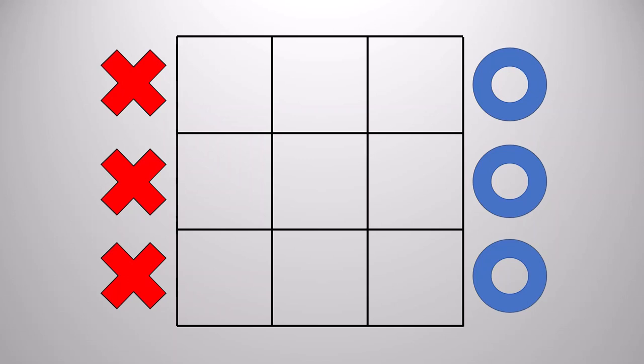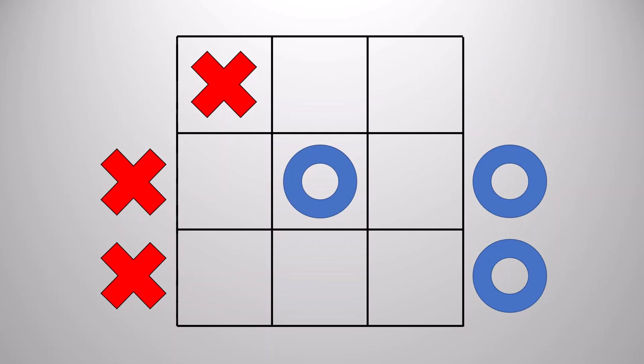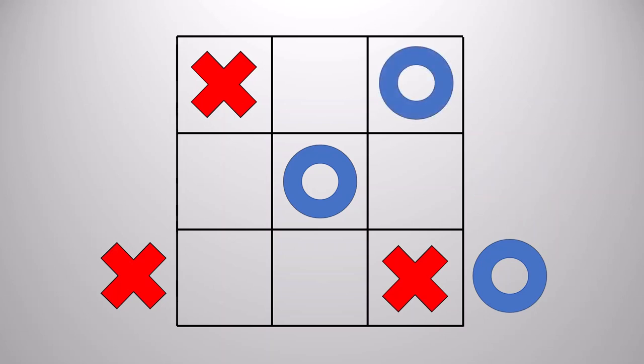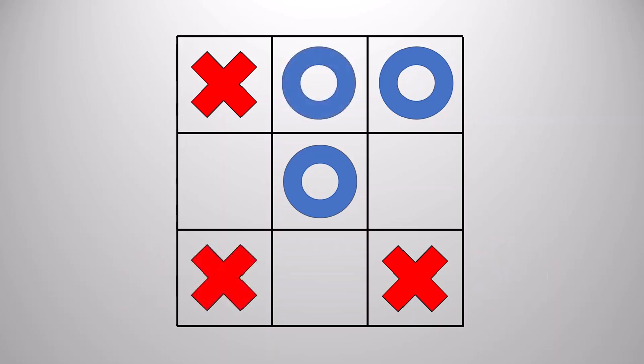For example, imagine that X began the game in a corner, O went to the center, X went to the opposite corner, O went to a third corner, X of course had to go to the remaining corner, and then O finished the game by placing the last piece there.